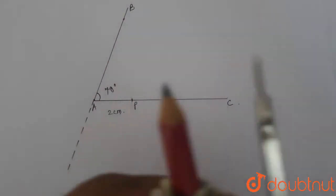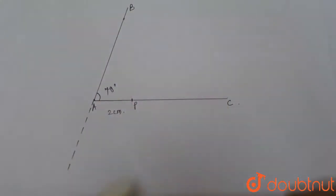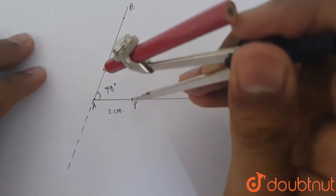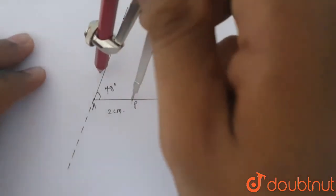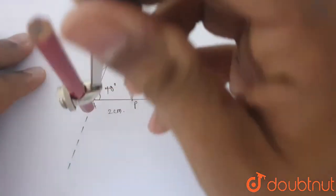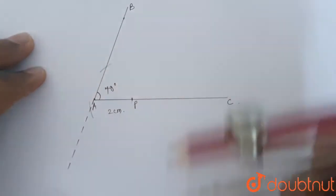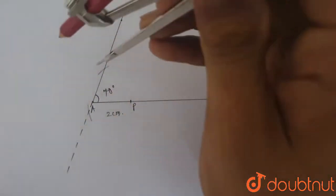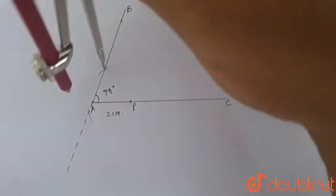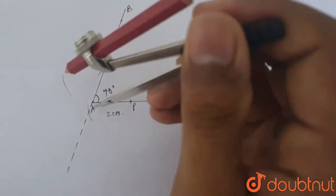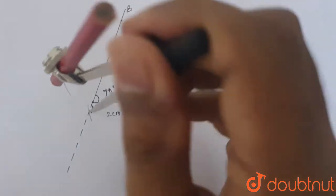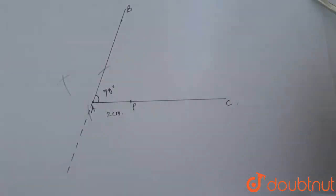Then, take a compass and take a random distance on the compass and mark, make an arc on side AB. Like this. From these 2 arcs, make 2 more arcs that are intersecting. Like this.